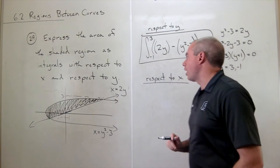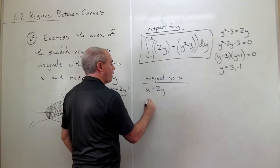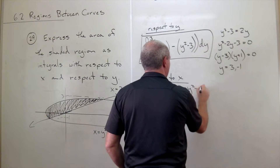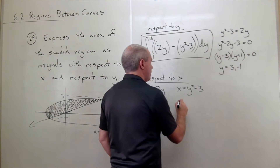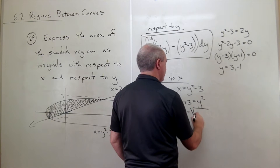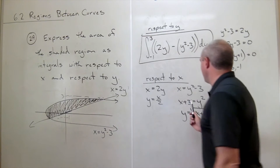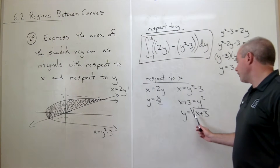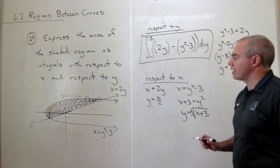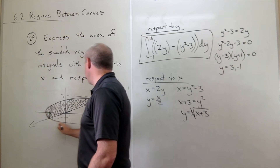Let's solve both functions for y. Solving x equals two y gives y equals x over two. Solving x equals y squared minus three gives x plus three equals y squared, so y equals plus or minus the square root of x plus three. The positive square root is the top half of the parabola, and the negative square root is the bottom half. I'm going to use a little trick to get around that problem.